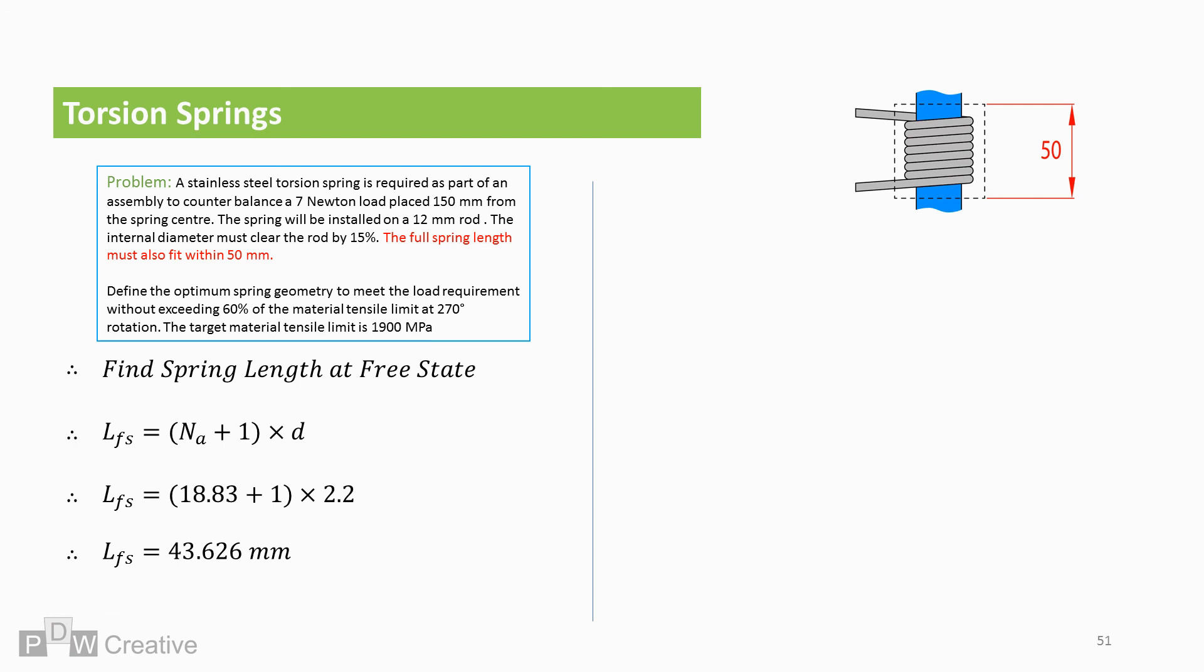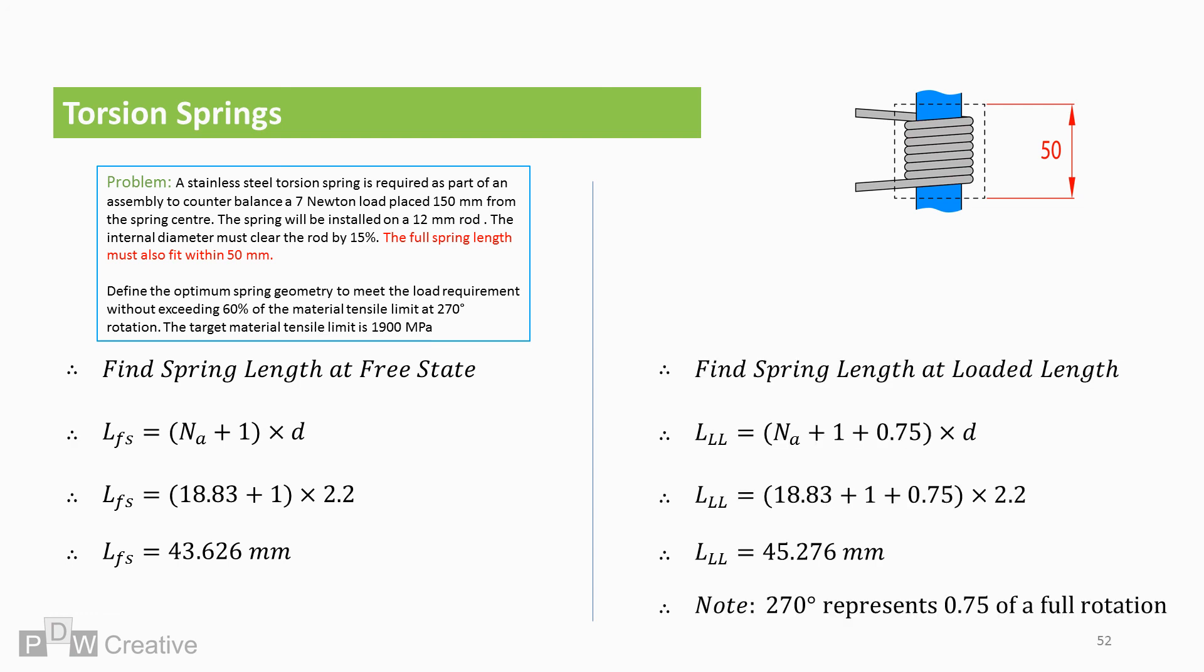But the spring grows in length under load, so we need this as well. The length under load is the worst case length as the spring expands as the coil count increases. Turning 270 degrees adds an additional 0.75 to the coil count. So, loaded length equals Na plus 1 plus 0.75 times d. This gives us a worst case length of 45.276 millimetres. This is below the 50 millimetre target, so the spring is good.